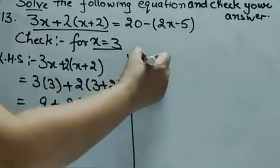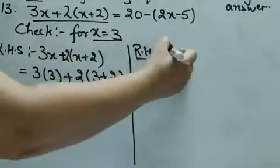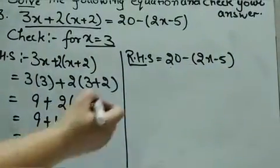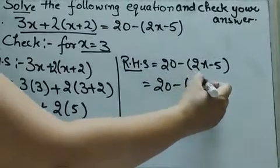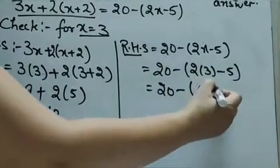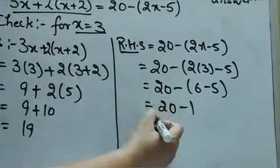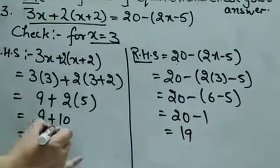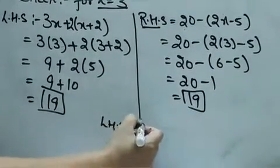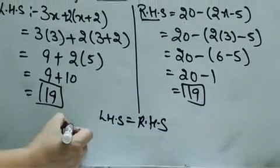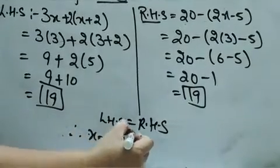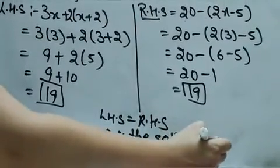Right hand side भी check करते हैं। अगर right hand side भी 19 मिल गई, it means जो हमने x की value find out की है वो correct है। RHS: 20 minus 2 into 3 minus 5. That is 20 minus 6 minus 5. 6 minus 5 is 1; 20 minus 1, that is 19. Left hand side and right hand side both are equal, so LHS = RHS. Therefore, x equal to 3 is the solution of the given equation.